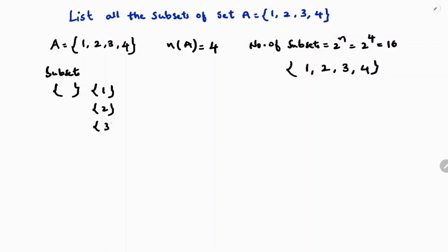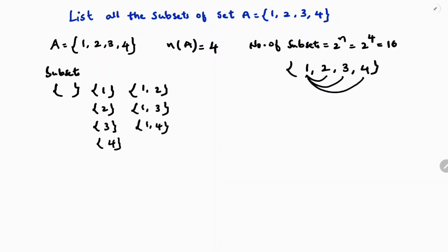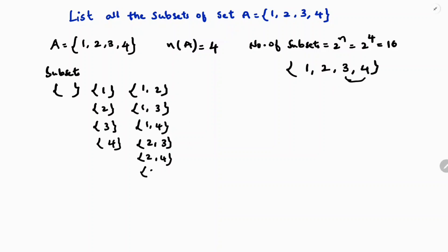Next, write sets with 2 elements. Make pairs starting with 1: {1,2}, {1,3}, {1,4}. Then starting with 2: {2,3}, {2,4}. Then {3,4}. All possibilities with 2 elements are done.